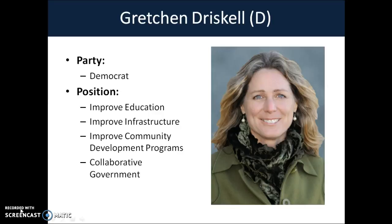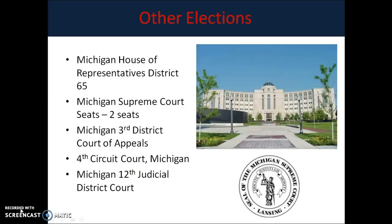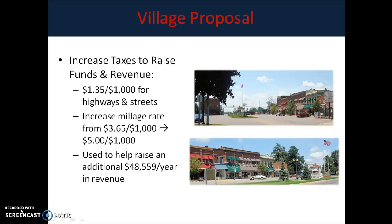That's your 7th District rundown. There are some other elections on the ballot that you won't vote on. You have the Michigan House of Representatives District 65 race — our state-level House race. There are also two Michigan Supreme Court seats up, as well as court seats in the Third District Court of Appeals, the Fourth Circuit Court of Michigan, and the Michigan 12th Judicial District Court, which is in Jackson. Those are the other main elections on our ballot. And here are a couple more of the main issues that you will get a chance to actually vote on — these two proposals.